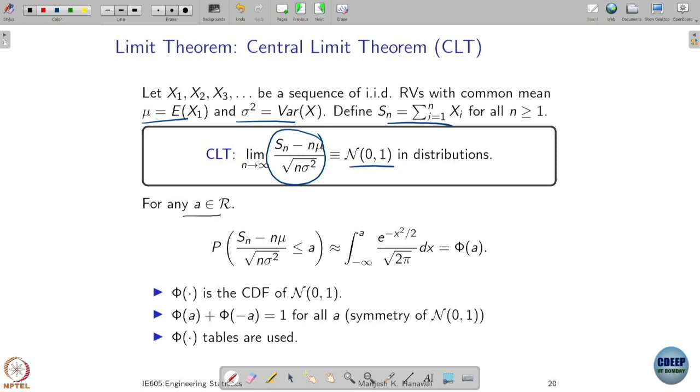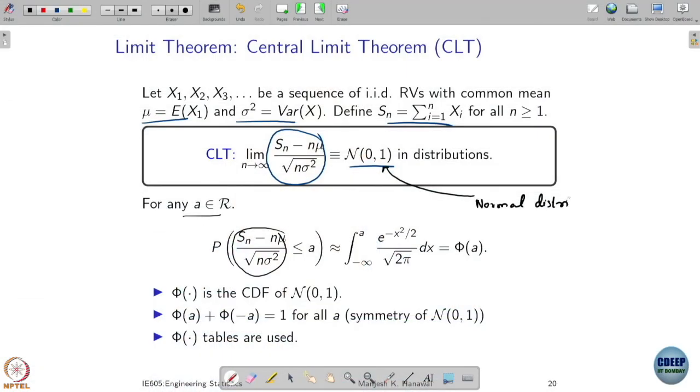How to compute this? One approximation we can do is when n is very large, when n tends to infinity, this quantity here behaves like a Gaussian distribution with mean 0 and variance 1. By the way, we are going to call this Gaussian distribution with mean 0 and variance 1 as normal distribution, because this comes up so many times, it has been given a special name called normal distribution.